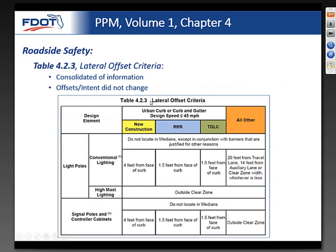Here's a preview of what the lateral offset criteria tables look like now. We created a matrix combining new construction lateral offset criteria, the triple-R, TDLC, and 'all other'—which is basically your high-speed limited access facilities. All parameters for design speeds less than or equal to 45 miles per hour for curb sections in urban areas are included. The offsets and intent of lateral offsets did not change—it's just a consolidation of all that information in one location.